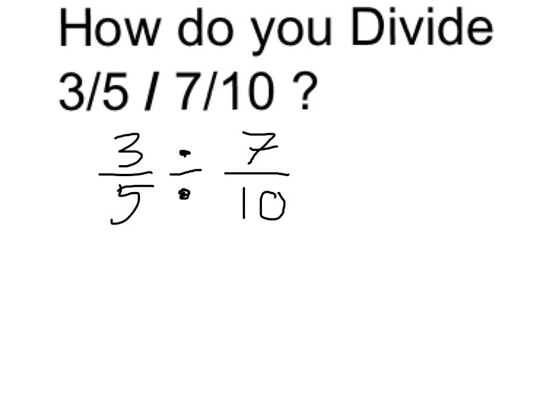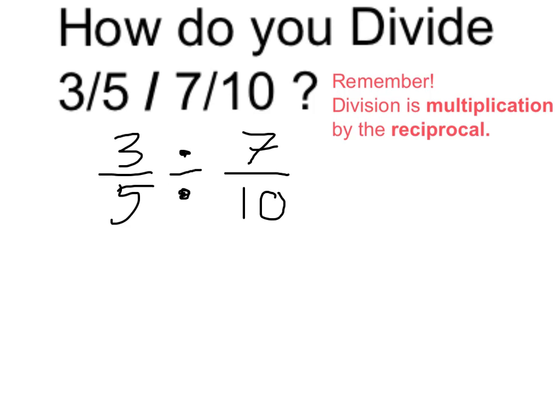Let's keep that in mind as we perform the algorithm. Proceeding with the algorithm, we'll remember that division is multiplication by the reciprocal, which means I can rewrite this as three-fifths times the reciprocal of seven-tenths, which is ten over seven.